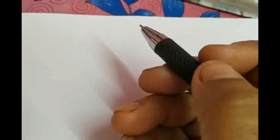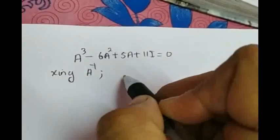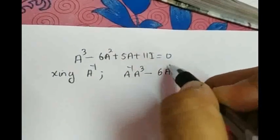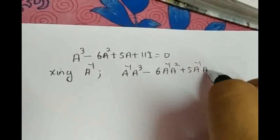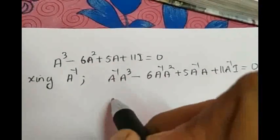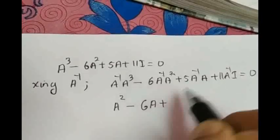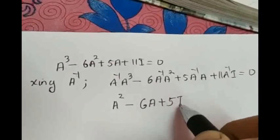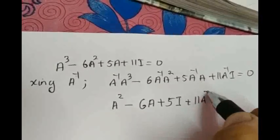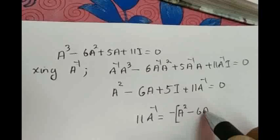The second question is: hence find A inverse. We take the equation A cube minus 6A square plus 5A plus 11I equal to 0. Multiplying the left side with A inverse, we get: A square minus 6A plus 5I plus 11A inverse equal to 0. From this, 11A inverse equals minus of A square minus 6A plus 5I.